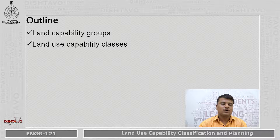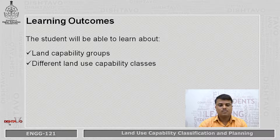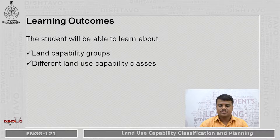The outline of the module is Land Capability Groups and Land Capability Classes. At the end of this module, students will learn about different land capability groups and their classification.